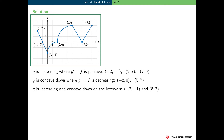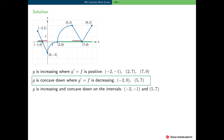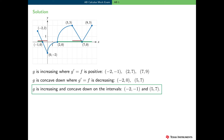Here's the graph of f, which equals g prime. g is increasing where g prime equals f is positive, on the three intervals indicated in green on the graph. g is concave down where g prime equals f is decreasing, on the intervals indicated in maroon on the graph. g is increasing and concave down where these intervals intersect: minus two to minus one and five to seven, which can be seen in the graph where the green and maroon intervals overlap.